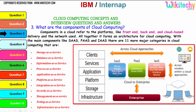For software as a service, typical examples are App Engine and Google. For platform as a service, examples include Gmail, and Salesforce. For infrastructure as a service, there are many companies such as Amazon Web Services, Akamai, and others.